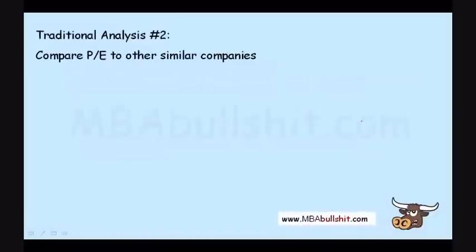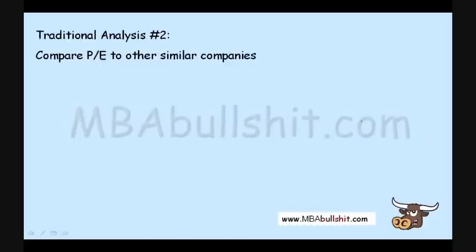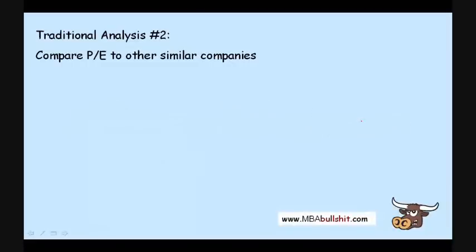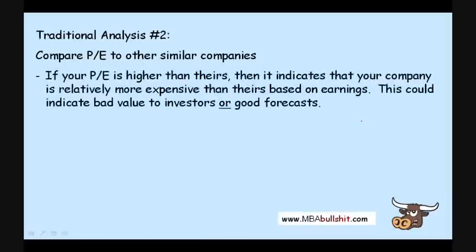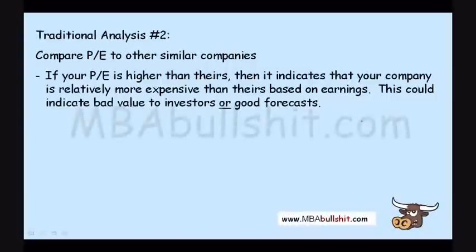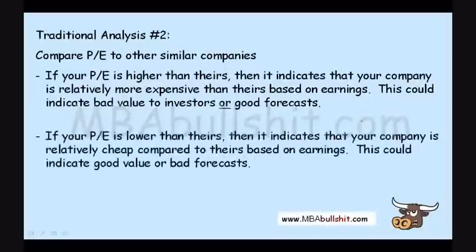Traditional analysis number two is to compare the Price Earnings Ratio of this company with that of other similar companies. For example, if it's a bank, you compare the Price Earnings Ratio of your company to another bank. If your Price Earnings Ratio is higher than theirs, this indicates that your company is relatively expensive compared to other companies based on earnings, which could indicate good value or bad forecasts.